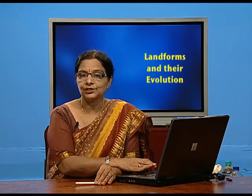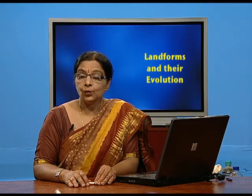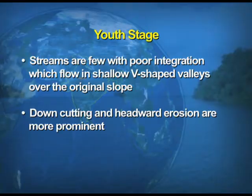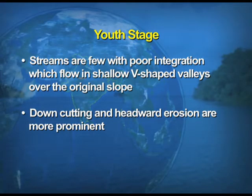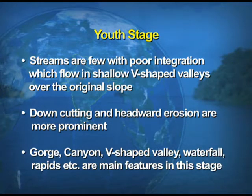First we take up the action of running water. There are three stages of running water, which we also call river action. The river has three stages: the youthful stage, the maturity stage, and the old stage. In the youthful stage, streams are few with very poor integration, flowing in shallow V-shaped valleys over the original slope. Downcutting and headward erosion are more prominent. The main features formed are gorge, canyon, V-shaped valley, waterfall, rapids, etc.